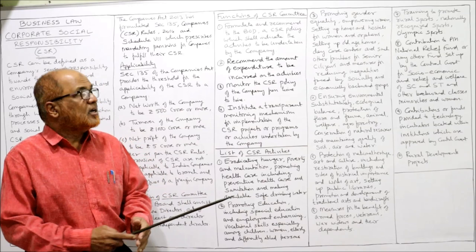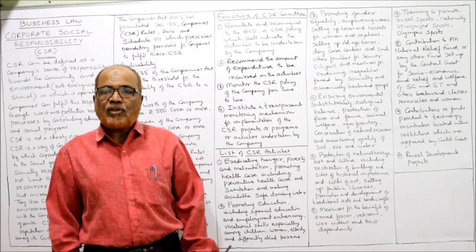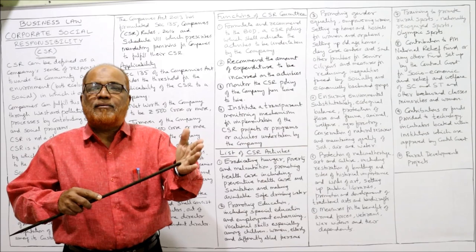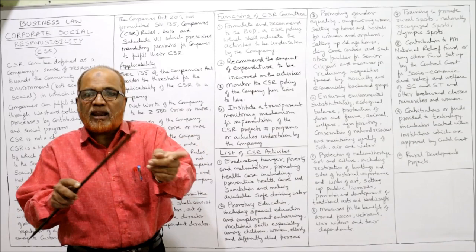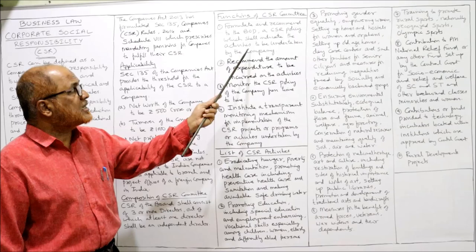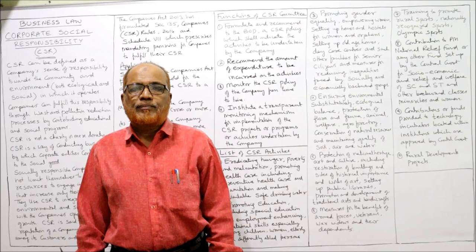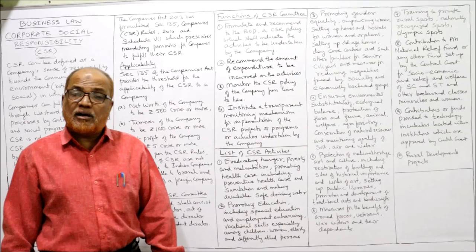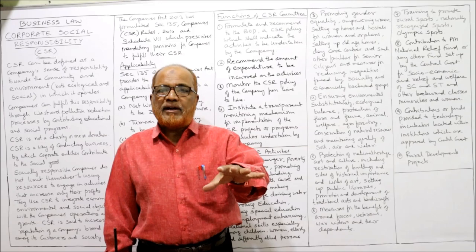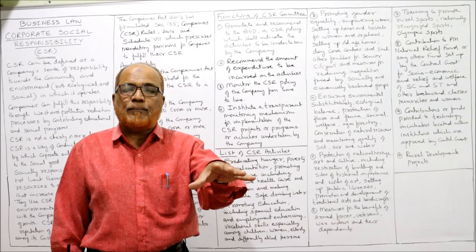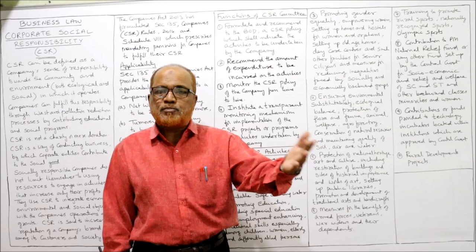What are the functions of the CSR Committee? First, it must formulate and recommend to the Board of Directors a CSR policy which indicates the activities to be undertaken. The CSR committee charts out the activities and intimates the Board of Directors. Second, it recommends the amount of expenditure to be incurred, since funds are required for implementing CSR. The CSR committee urges the Board of Directors to sanction funds for CSR activities.